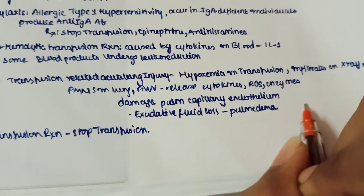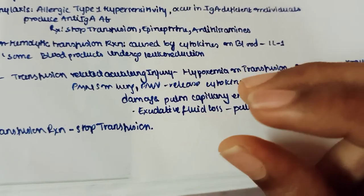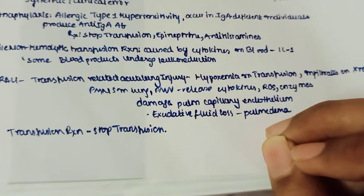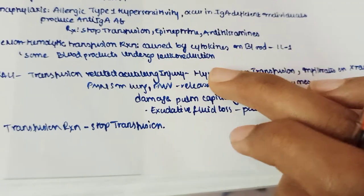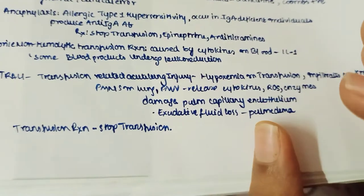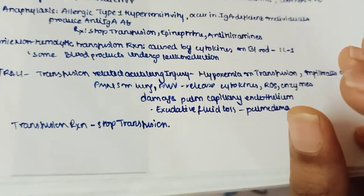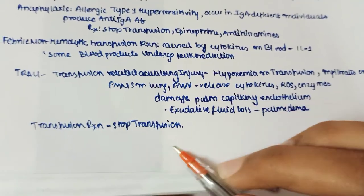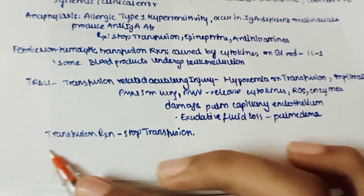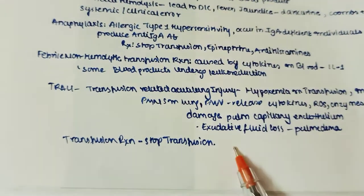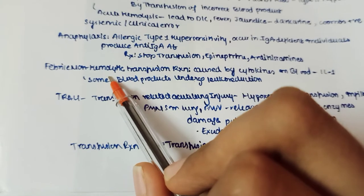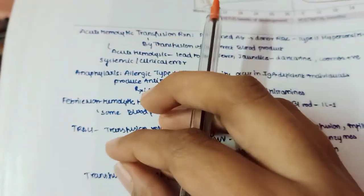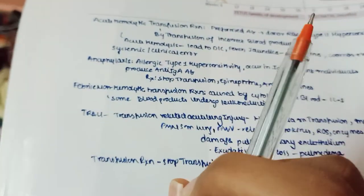In TRALI, PMNs in the lung release cytokines and reactive oxygen species and enzymes, damaging pulmonary capillary endothelium and causing exudative fluid loss — pulmonary edema. This starts with hypoxemia from wrong blood group leading to decreased blood cells. The primary treatment in all transfusion reactions — TRALI, febrile non-hemolytic, anaphylaxis, acute hemolytic — is to stop the transfusion.